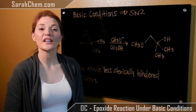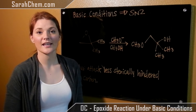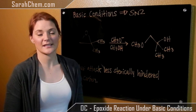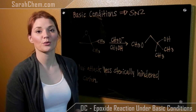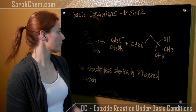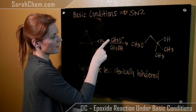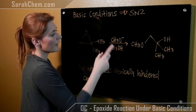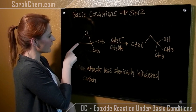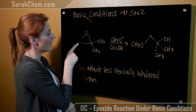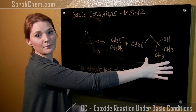Hi everyone. This is a video tutorial for the substitution reaction on an epoxide happening under basic conditions. If we have basic conditions, we're going to see an SN2 reaction happen. We have our epoxide and the basic conditions here with the methoxide anion. The methoxide anion will come and attack the less sterically hindered carbon, breaking this bond, and we get out a product that looks like this.